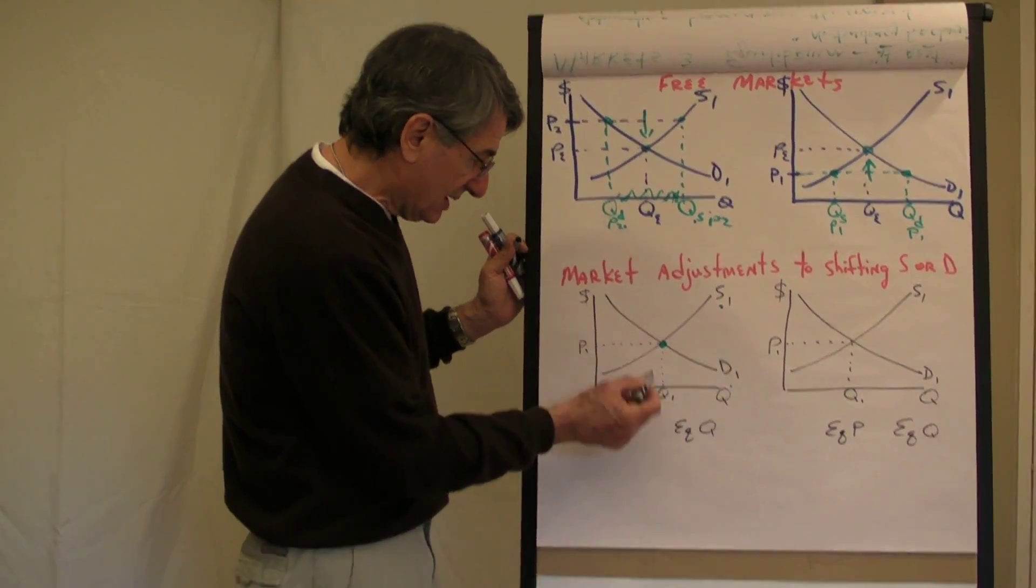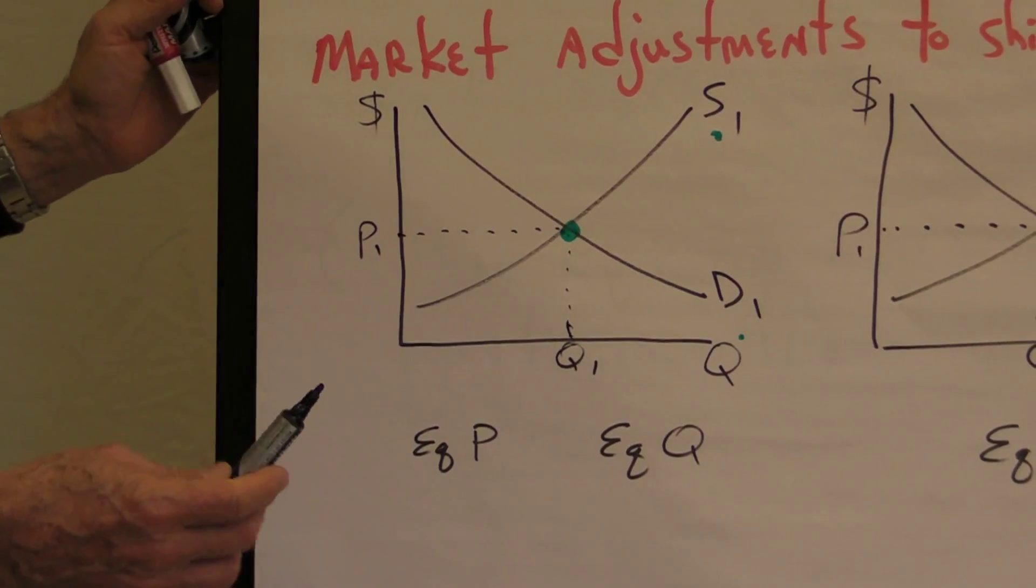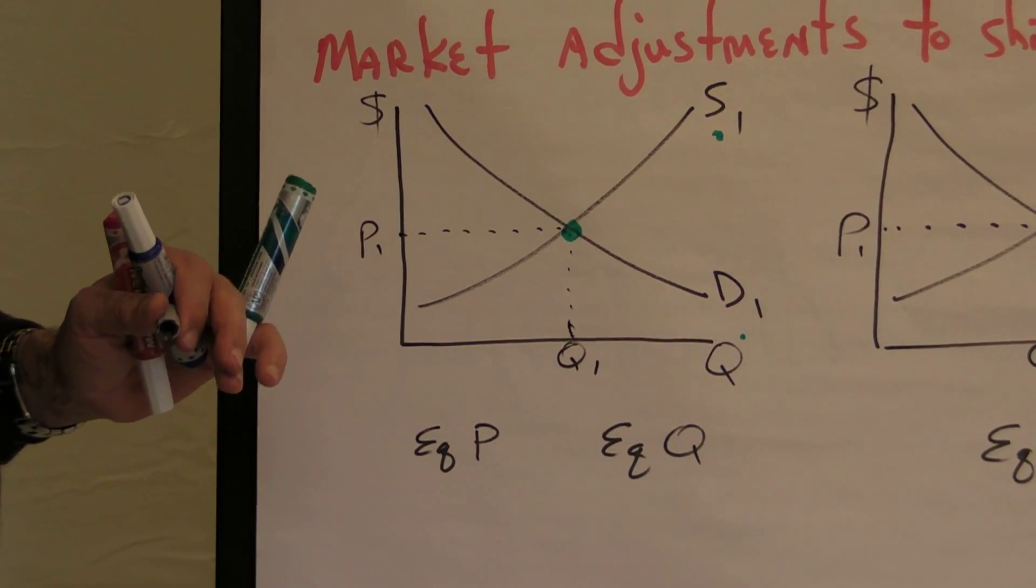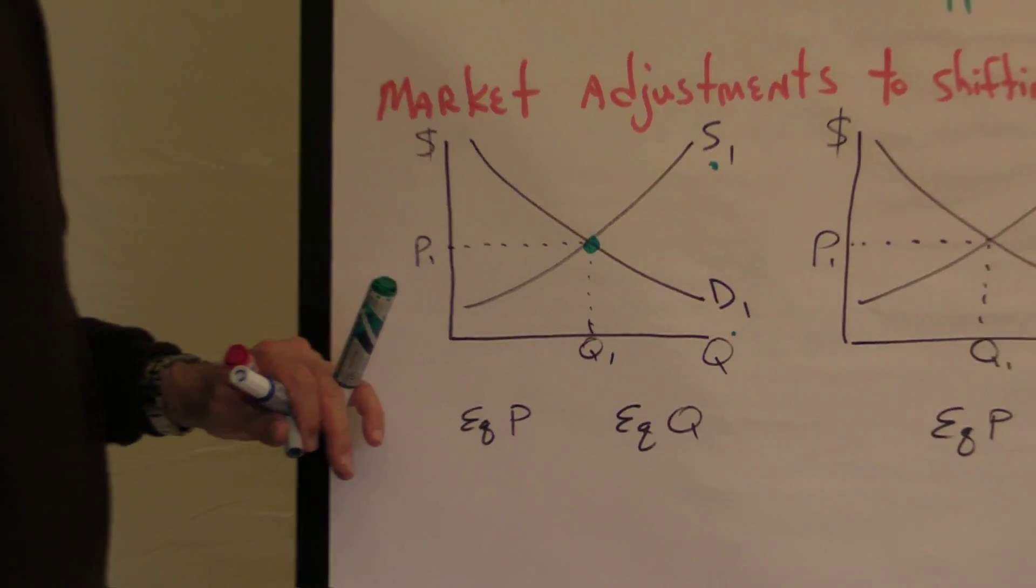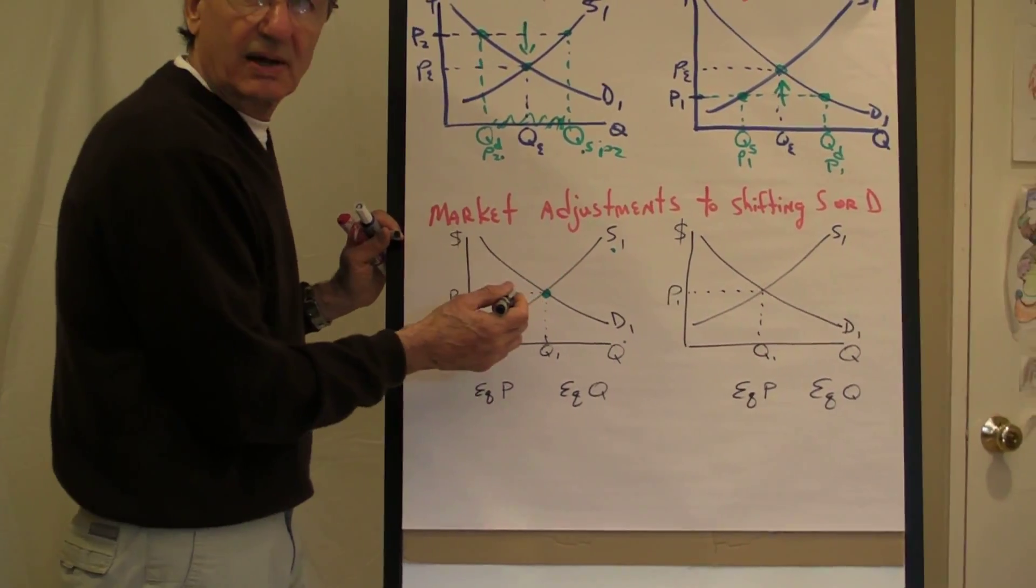So, our next issue is, what happens if one of these other things changes? One of these things that has held constant changes? Well, we know that this list of things that change the demand curve is, in times past, really good beer existed. Income, tastes and preferences, related goods, number of buyers, and consumer expectations. So, if one of those changes, then the demand will shift.